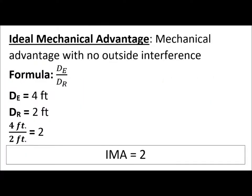To calculate the ideal mechanical advantage, we take the distance of the effort from the fulcrum divided by the distance of the resistance from the fulcrum. In this example, let's say the distance of effort is four feet and the distance of the resistance is two feet. In this case, the ideal mechanical advantage is two.